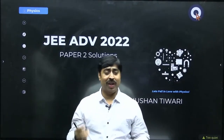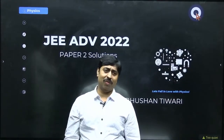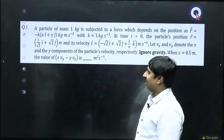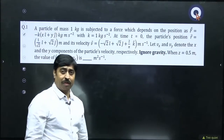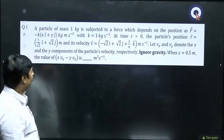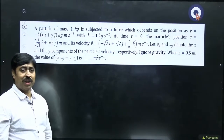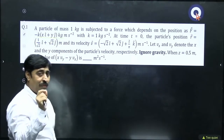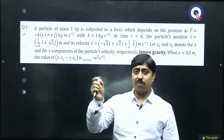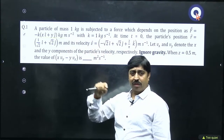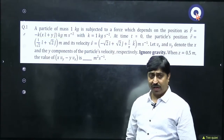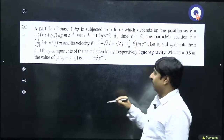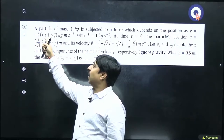Let us begin. I will show you the entire paper but deliberately skip the tougher ones; in another video I will solve the remaining tough questions. This is the first question in JEE Physics 2022 second paper. A particle of mass 1 kg is subjected to a force which depends on position. The force varies with x and y coordinates of the particle, and k is a constant with value 1 in units of kg per second squared.